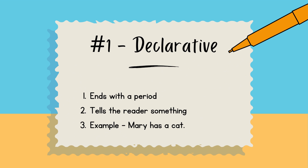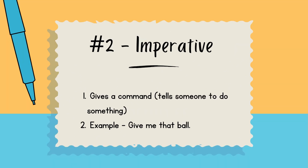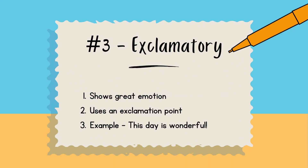The next is the imperative sentence. This kind of sentence gives a command or makes a request — it tells someone to do something. Examples include 'Give me that ball' or 'Close the door.' So it can be either a command or a request.